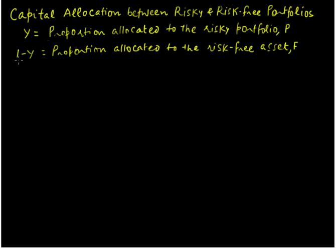Let us say that Y is the proportion that we allocate to the risky portfolio, and we have given the risky portfolio a name, P. This also means that 1-Y is the proportion that is allocated to the risk-free asset, and we have given the risk-free asset also a name, F.